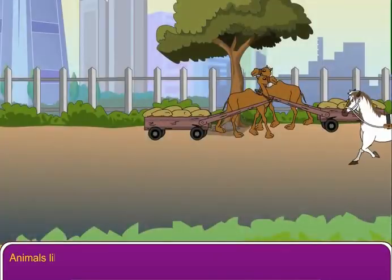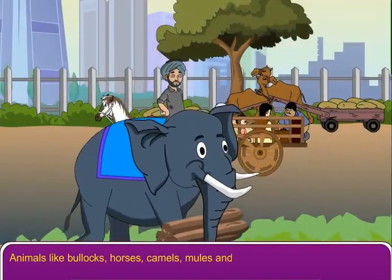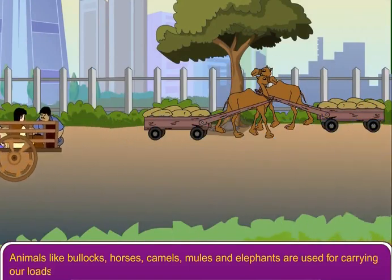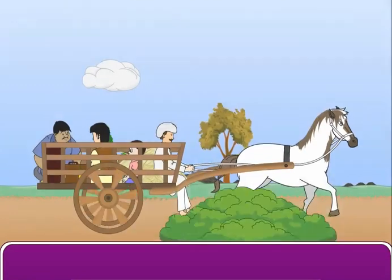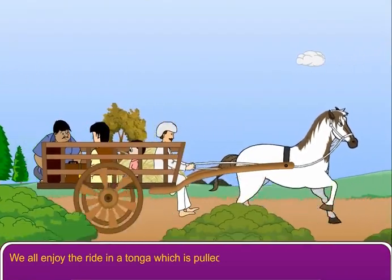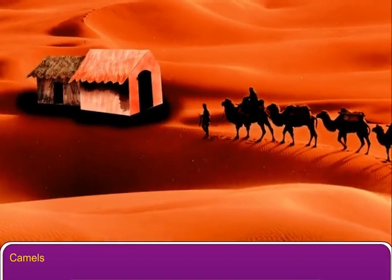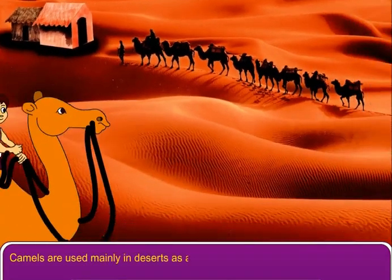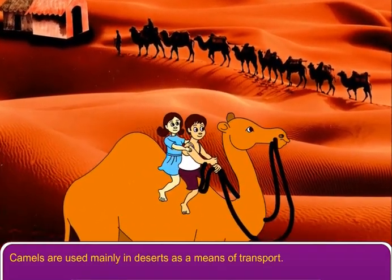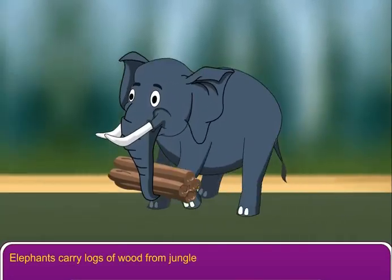Animals like bullocks, horses, camels, mules and elephants are used for carrying our loads. We all enjoy the ride in a tonga which is pulled by horses. Camels are used mainly in deserts as a means of transport. Elephants carry logs of wood from jungles.